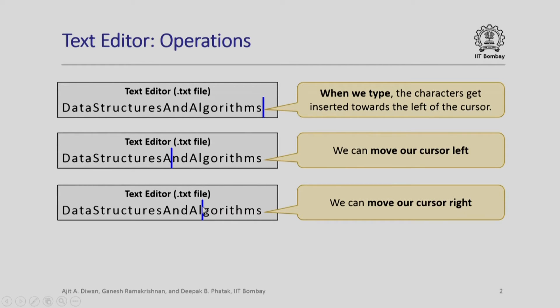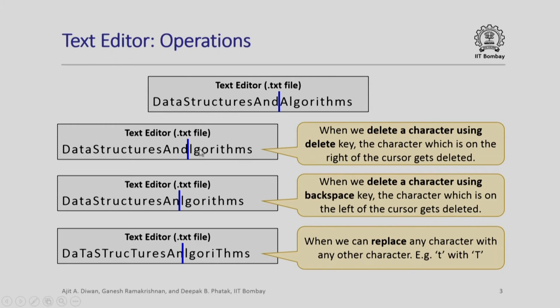At the cursor point, we have the option of inserting a new character or deleting a character either on the left or right. We can simplify this notion of inserting or deleting characters at the cursor and moving the cursor left and right using stacks. When we delete a character using the delete key, the character on the right of the cursor gets deleted. For example, if there was a character A and I press the delete key, the capital A will disappear.